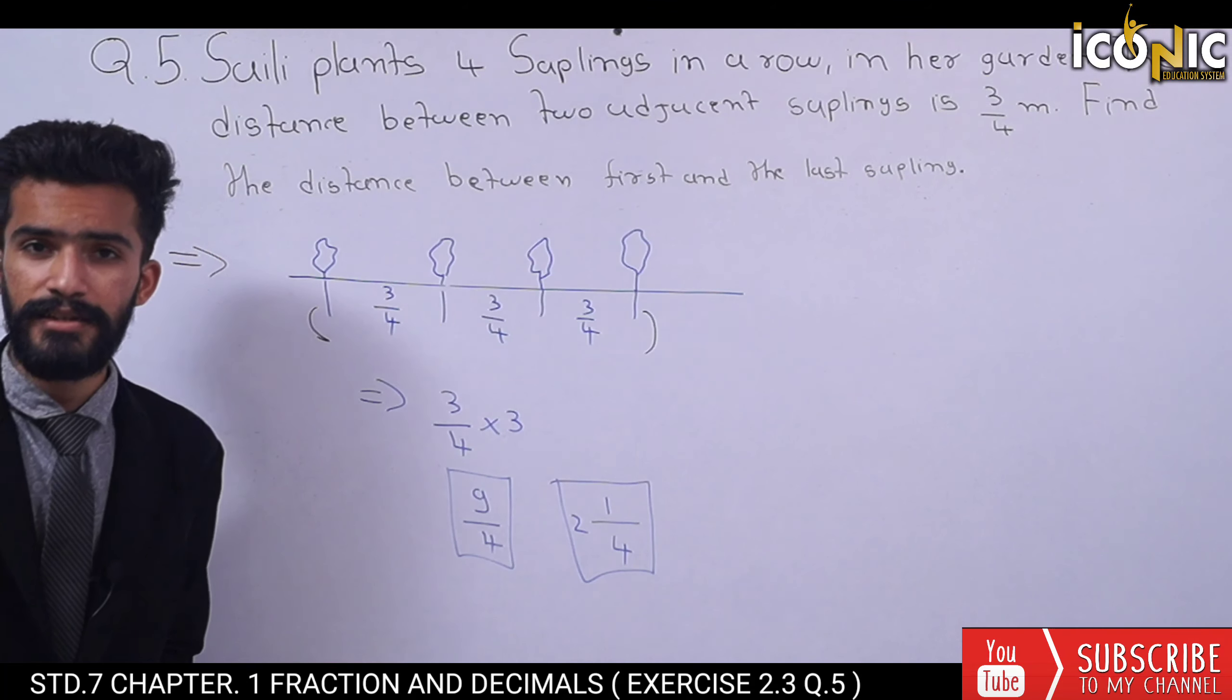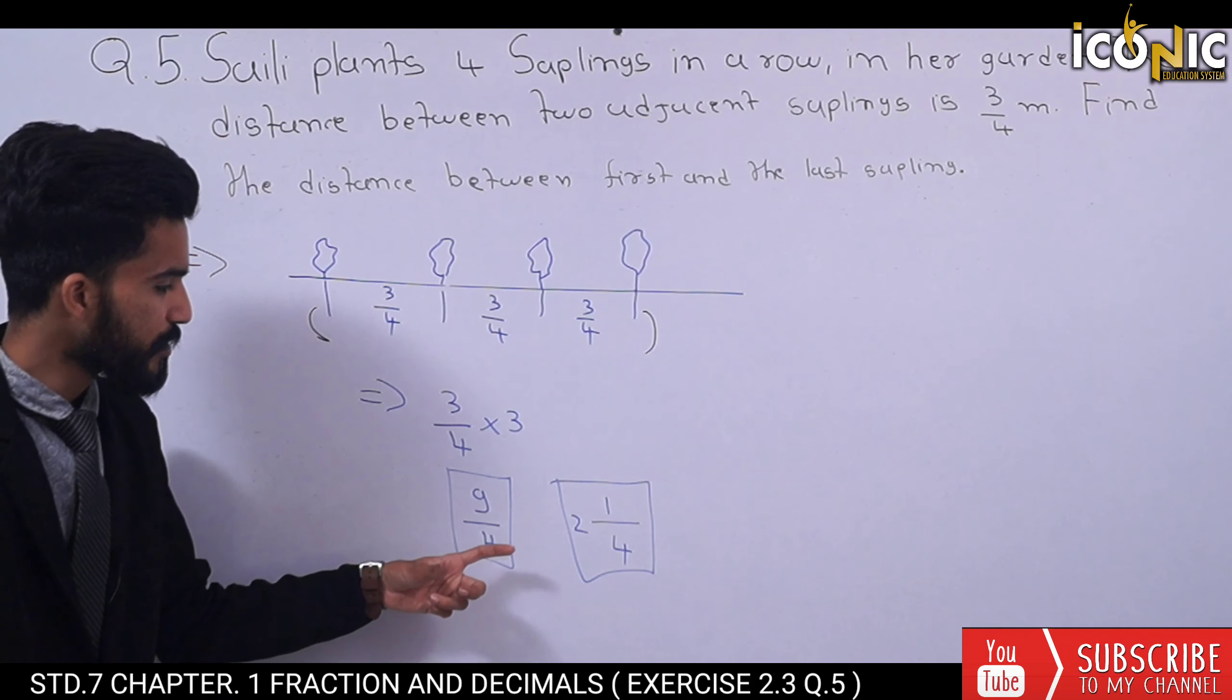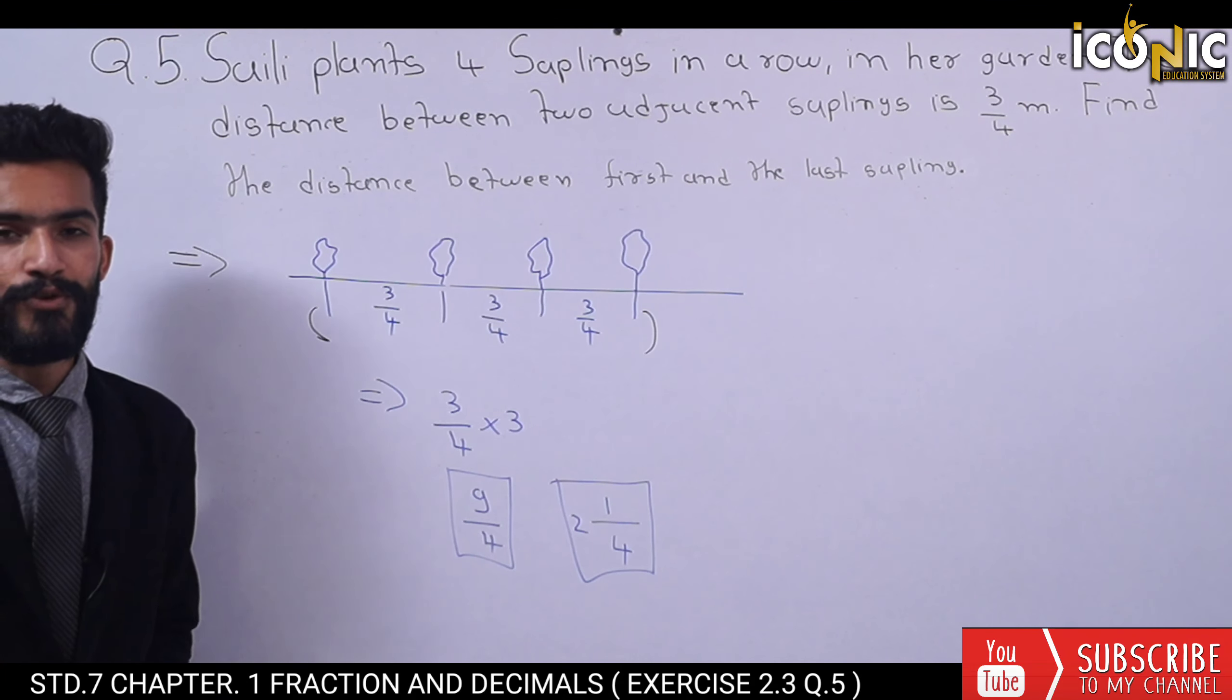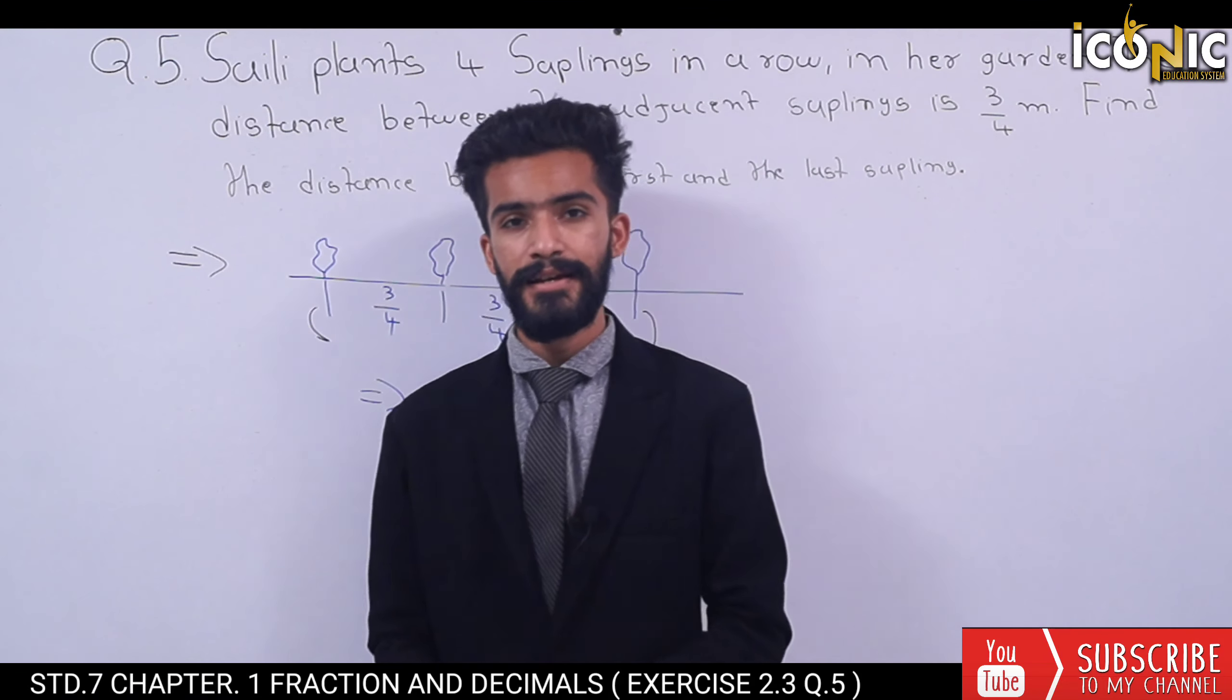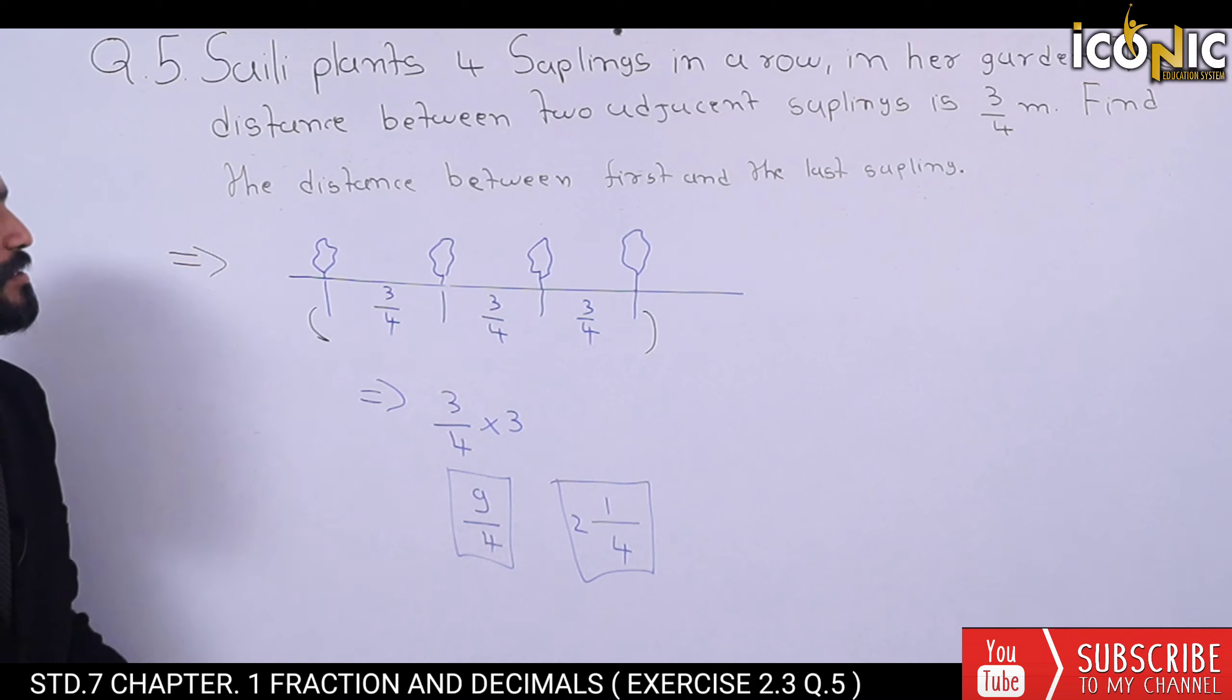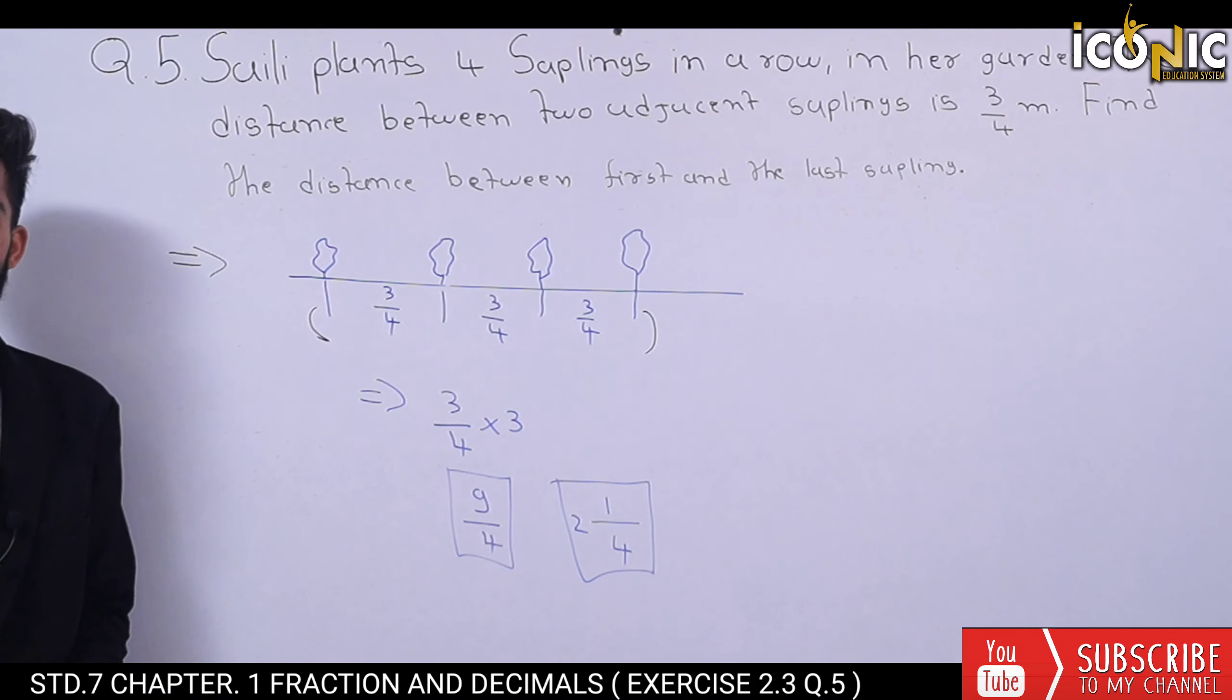First and last sapling distance: 9/4 or 2 and 1/4. This is the solution to Question Number 5. Now we will go to our next example. You can write the answer or take a screenshot.